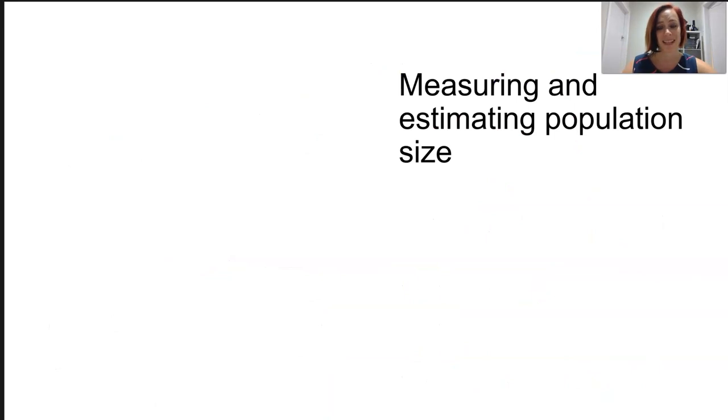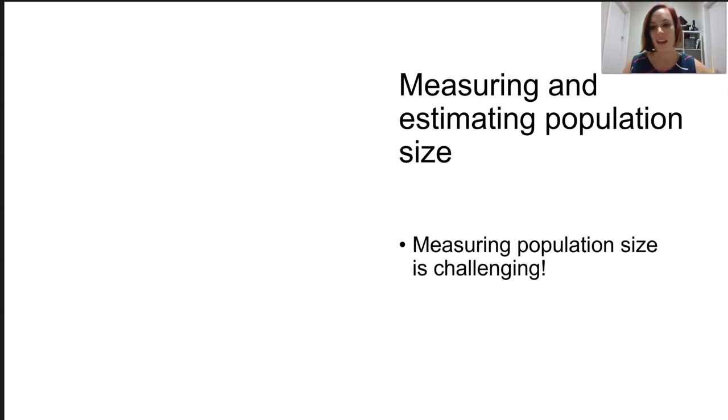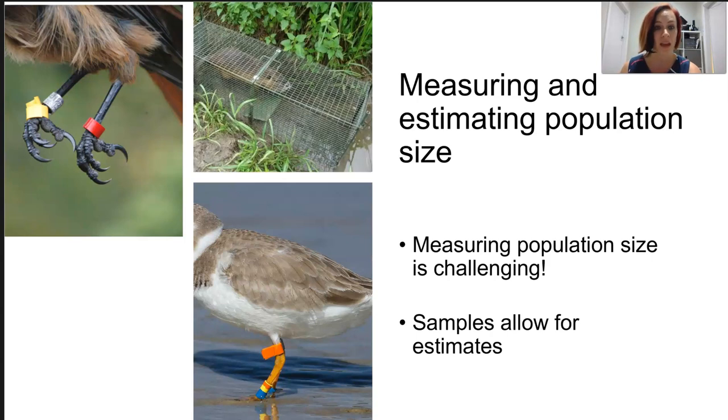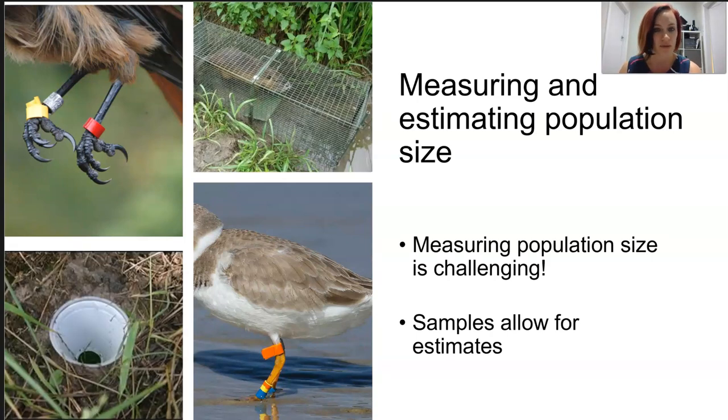Measuring and estimating population size we've talked about is really challenging. The logistics of doing this, considering organism movement, they're hiding in their habitats, and a method of counting we need to use as scientists that are not intrusive or dangerous to the scientists. Habitats might also be really inaccessible. So scientists take samples of populations to make educated estimates of the population size. You might see that they tag birds, they set these kind of little traps, like pitfall traps.